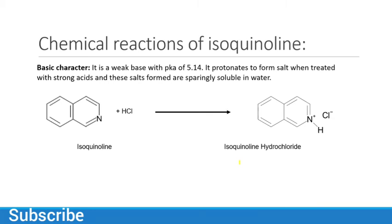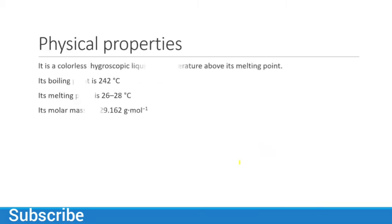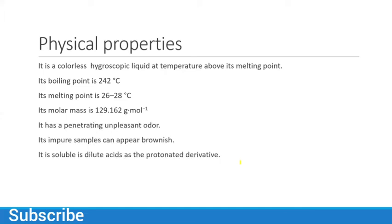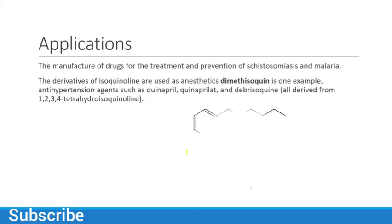Regarding physical properties: isoquinoline is a colorless hygroscopic liquid at room temperature above its melting point. Its boiling point is 242°C and melting point is 26–28°C. Its molar mass is 129.162 g/mol. It has a penetrating, unpleasant odor; impure samples can appear brownish. It is soluble in dilute acid as the protonated derivative.